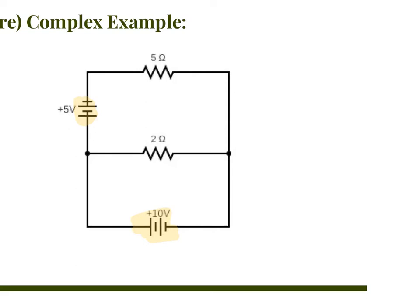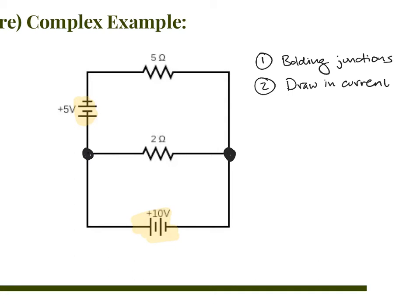The steps I use start with number one: bold the junctions so you know where they are. After you've identified the junctions, step two is to draw in the currents with arrows and labels — this step is really important.